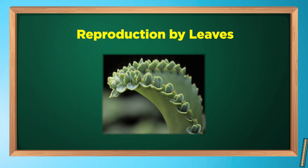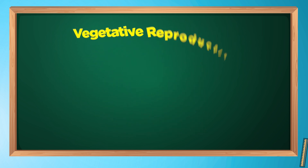Some plants reproduce through leaves. The leaves have buds on their margins which grow into a new plant when they fall from the parent plant. As we saw, many plants — especially the seedless plants — use vegetative methods through their roots, stems, and leaves naturally to produce new plants. These are called natural methods of vegetative reproduction.